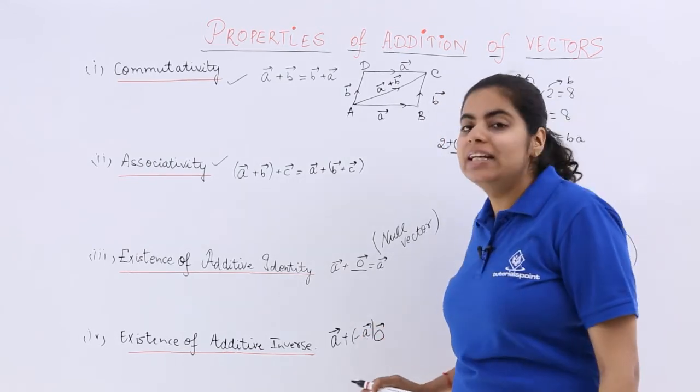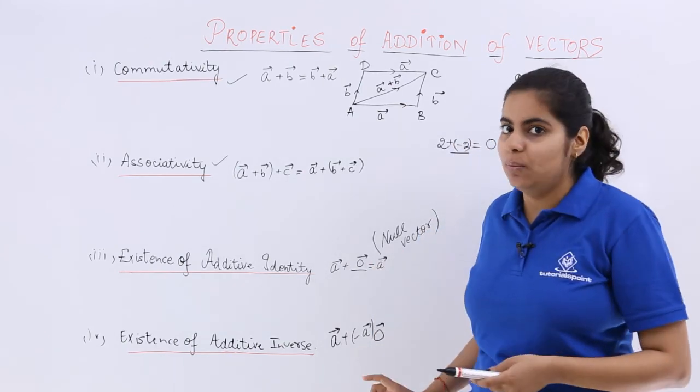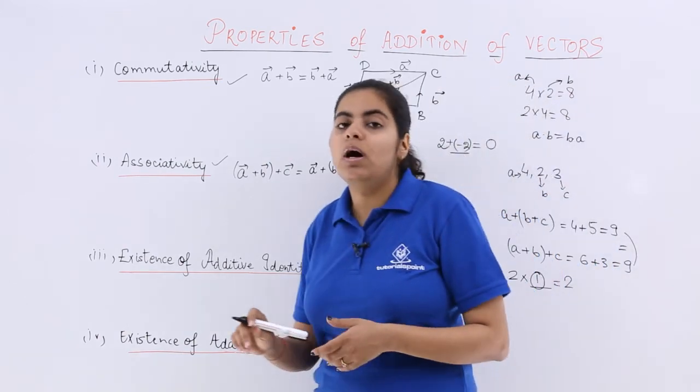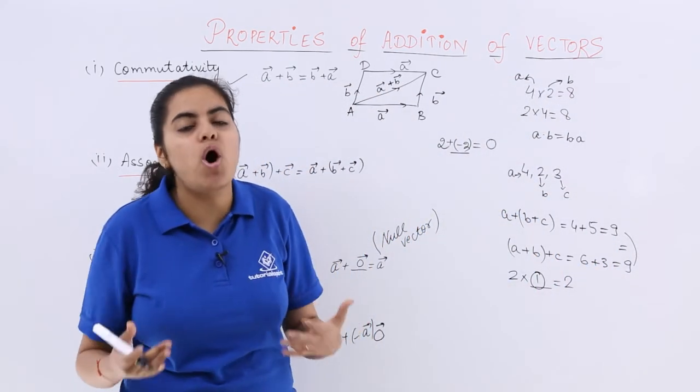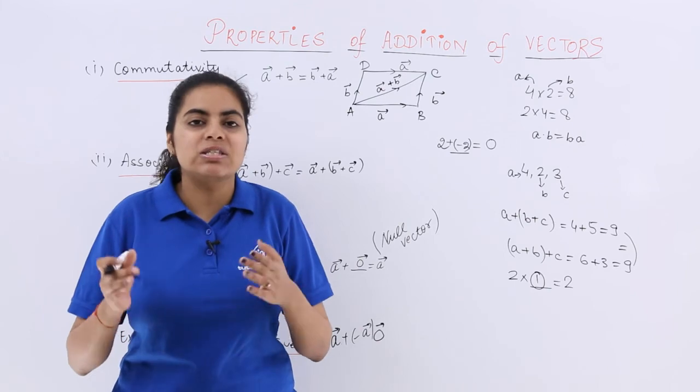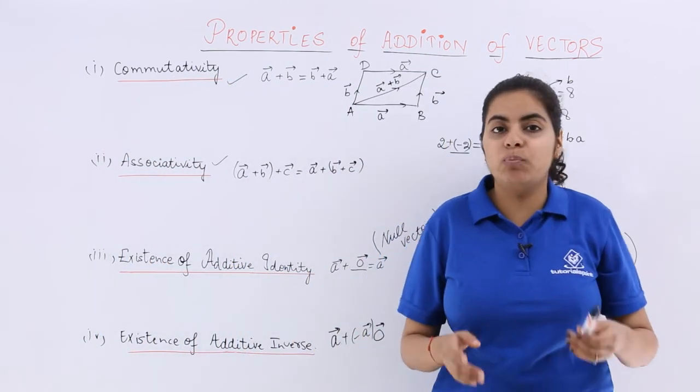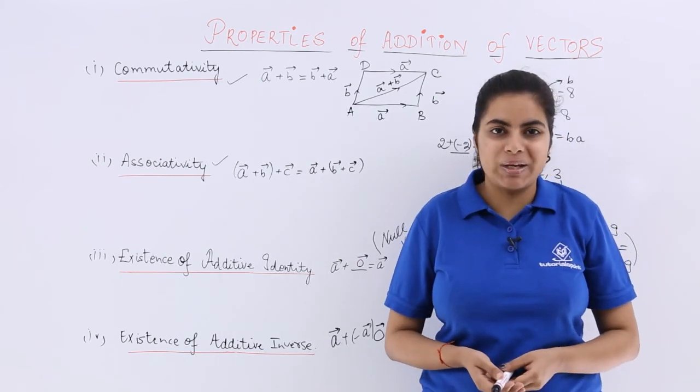So the negative vector when I add will give me null vector. So that means the additive inverse will be what? It will be the negative of that given vector. So these are the 4 important properties which we started with the help of example in case of properties of addition of vectors.